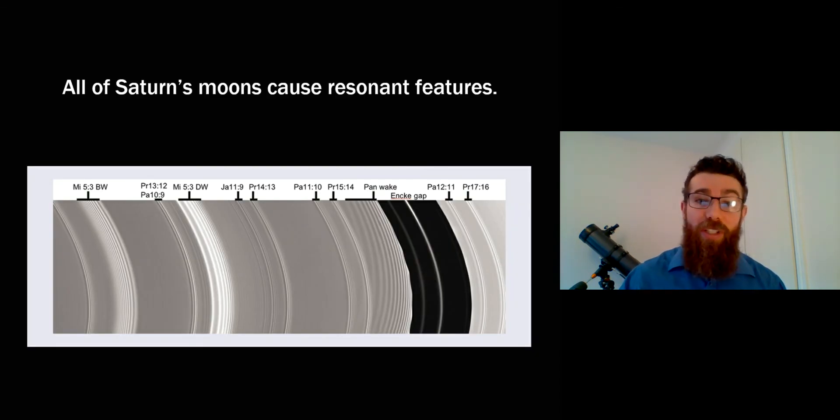And pretty much all of Saturn's rings are going to cause some resonant-like structure. So here you've got an example, again zoomed in a little bit closer to the rings, you've got the moon Mimas, you've got Prometheus, you've got Pandora, you've got quite a few there all causing these resonant-like structures. And you can see the numbers there represent the actual ratios of them and some of them aren't as strong as others. So you know 15 to 14 is not as strong as 2 to 1. And you've got a whole variety of structure there. They're not all the same.